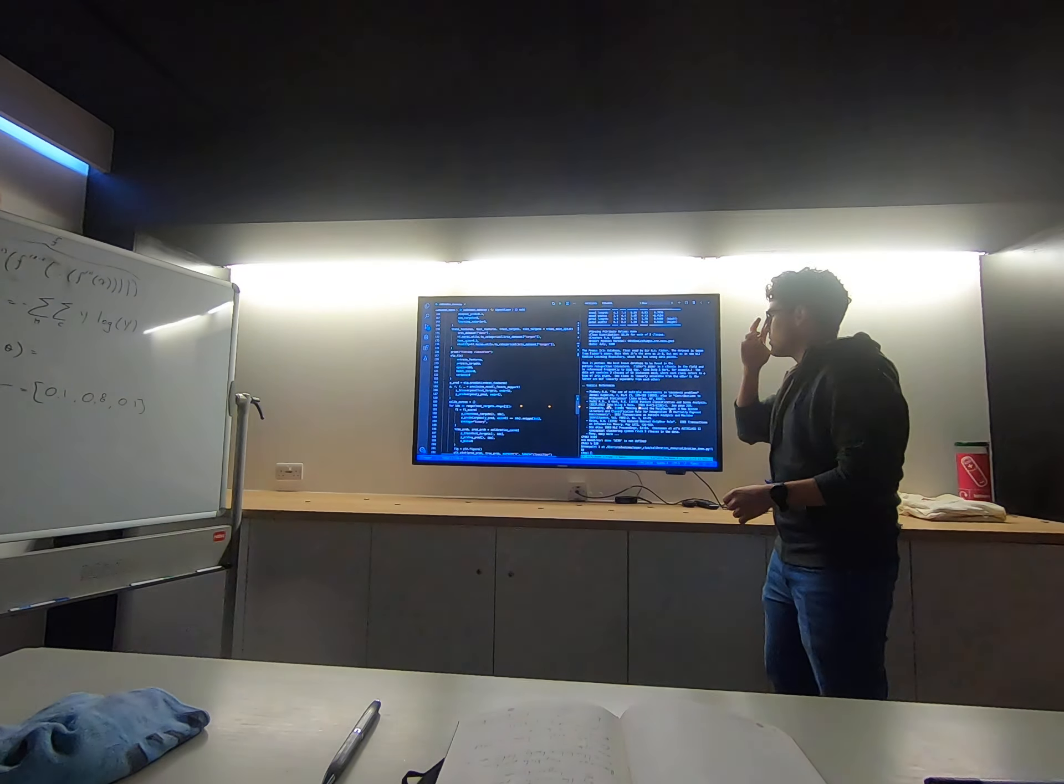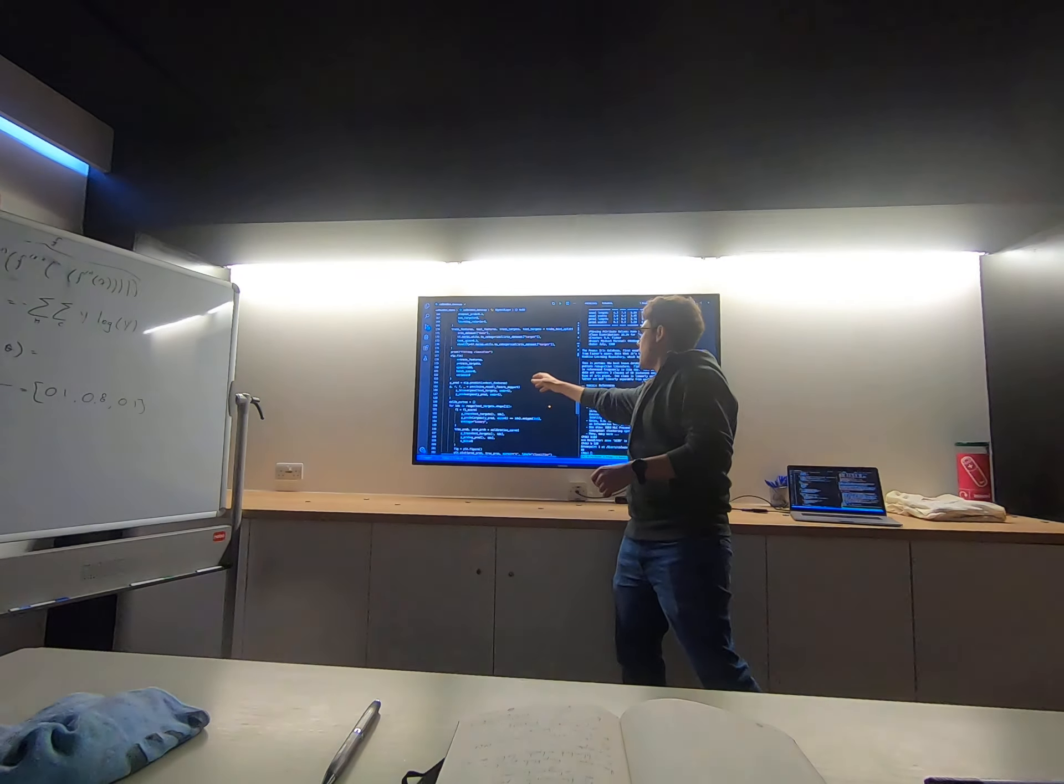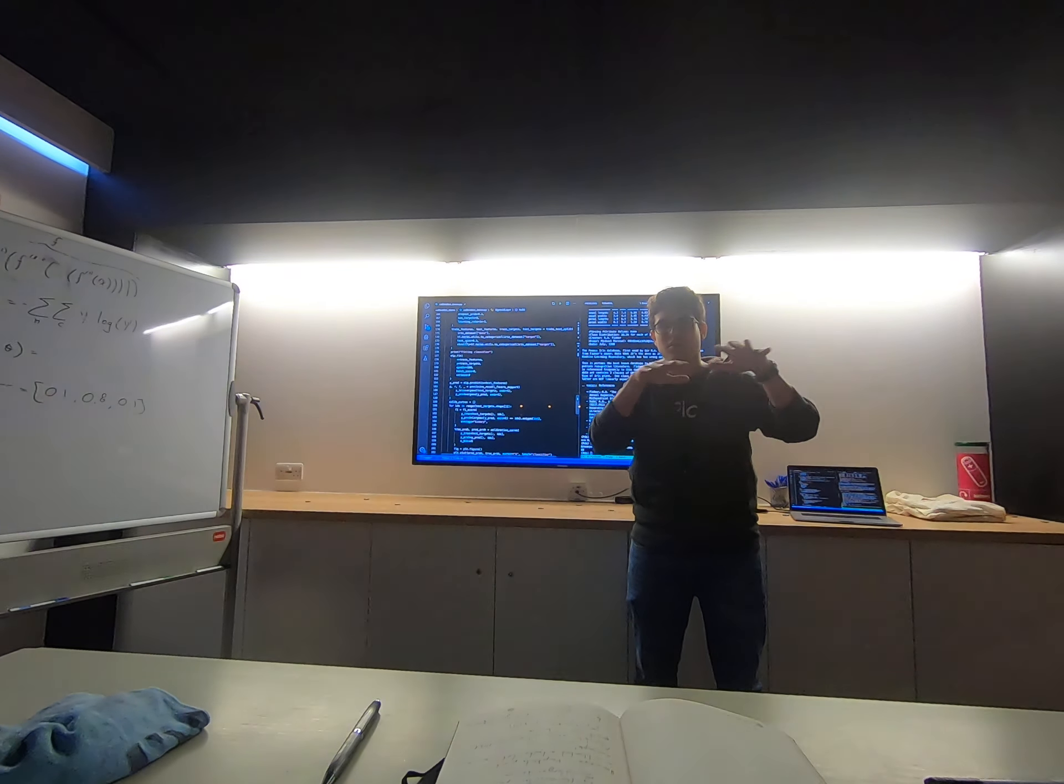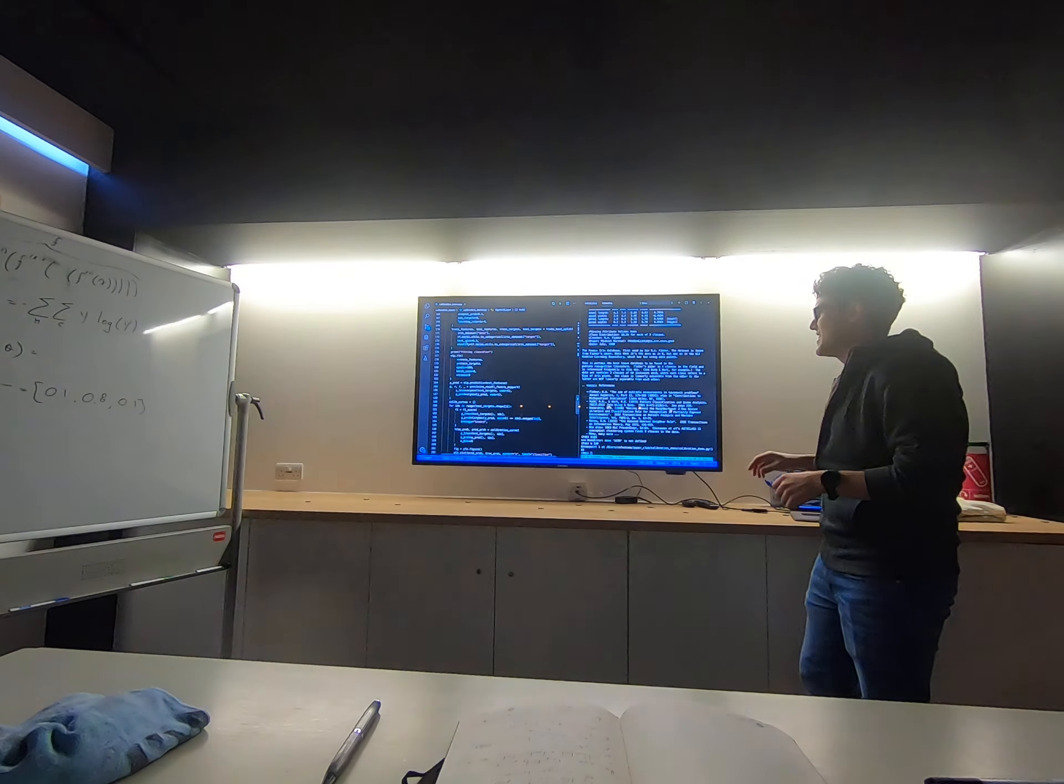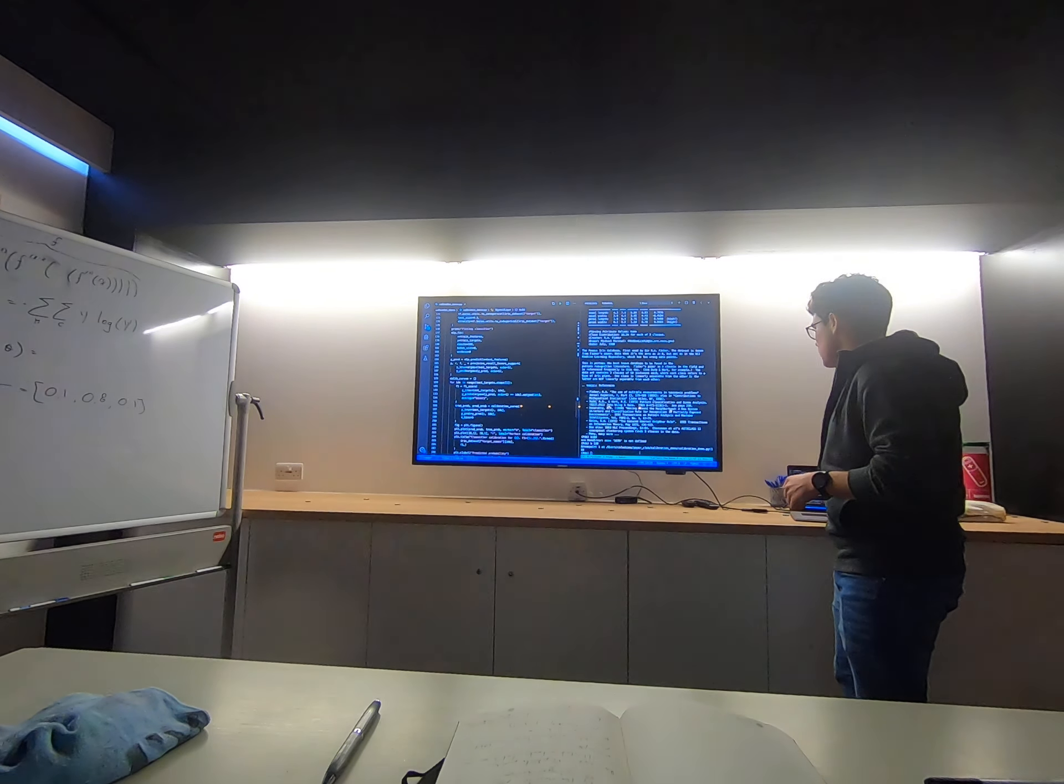So we're going to use 30% for testing and then 70% for training. And just because the data set is very small, we're going to enforce that the balance of the classes is maintained in the training and the test set, otherwise we end up with very poor conditions for testing.